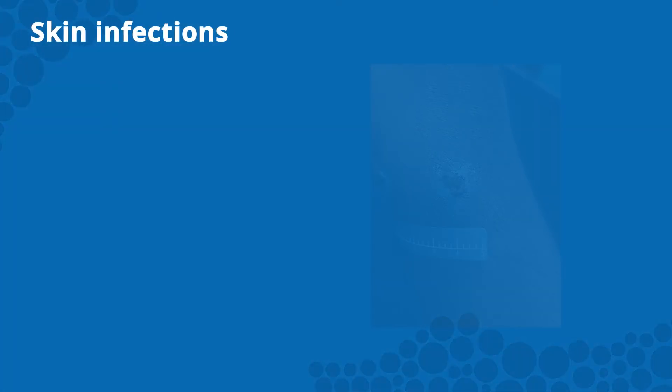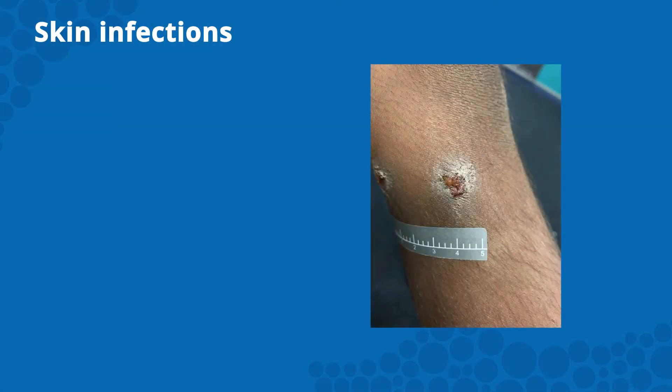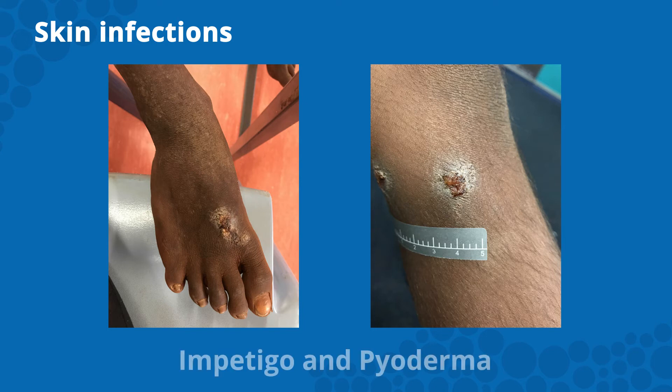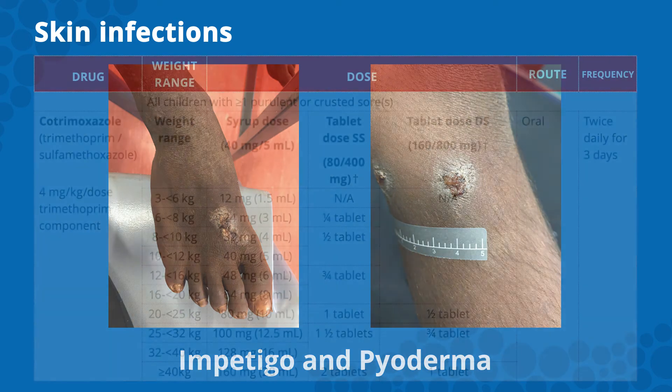Skin infections. Strep A can enter the body through a break in the skin due to insect bites, scabies, head lice, tinea, and minor trauma to cause skin infection. These infections are called impetigo and pyoderma. Lesions are usually round or linear, one to two centimeters in size, and have pus or a thick crust.